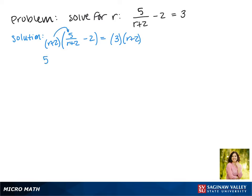In our first term on the left, that (r+2) will cancel completely, and in the second term we'll have to distribute that -2. On the right, we distribute the 3 and get 3r + 6.